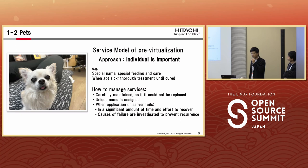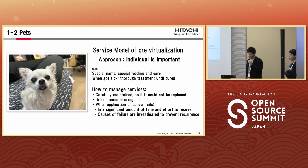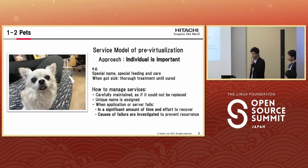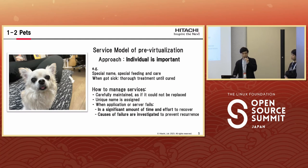Pets is a service model of pre-virtualization where the individual is important. Some of you may have dogs, cats, or other pets at home. You give your pets a special name, special feeding, and care. When they get sick, you give thorough treatment until they are completely cured. In service management terms, services are carefully maintained as they cannot be replaced. A nickname is assigned, and when an application or server fails, recovery takes significant time and effort. The causes of failure are investigated to prevent recurrence.